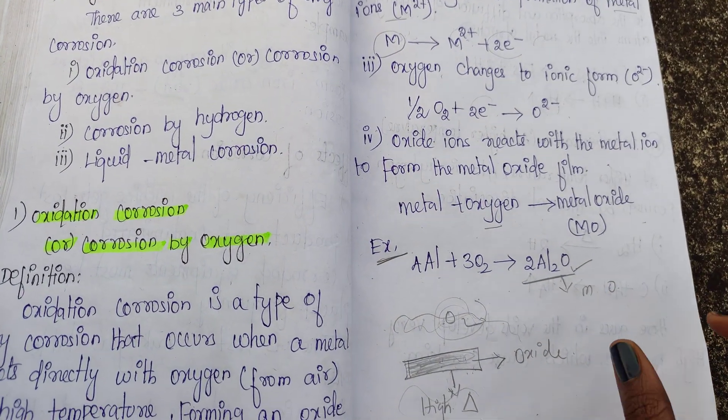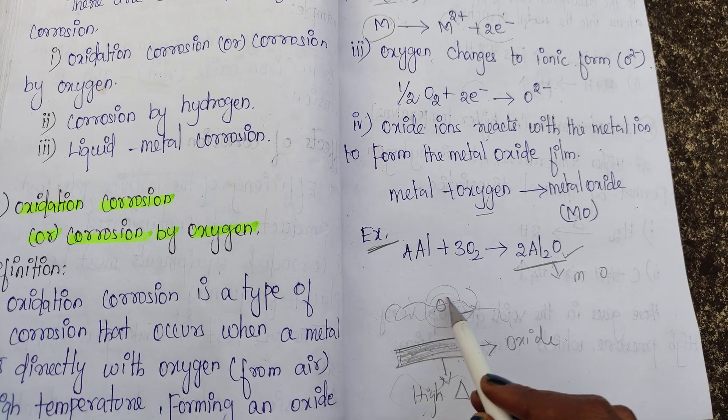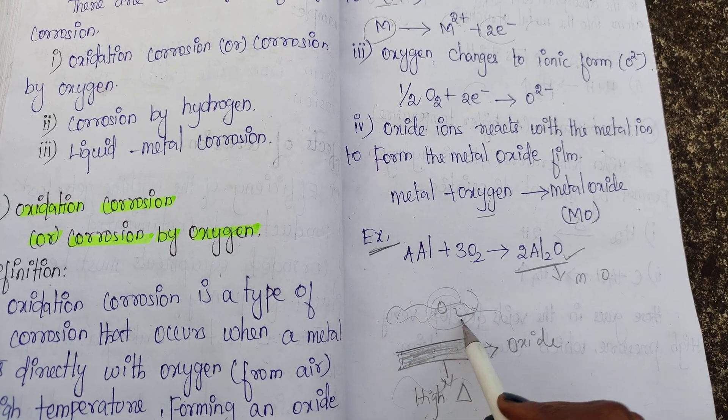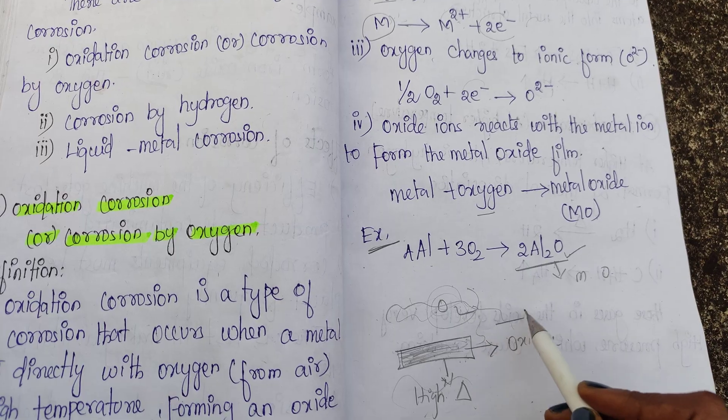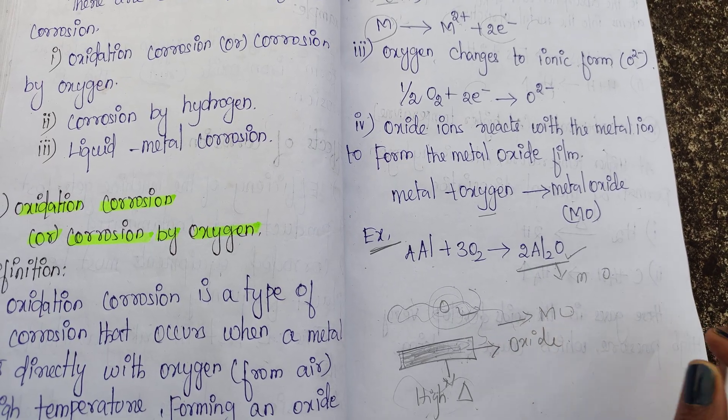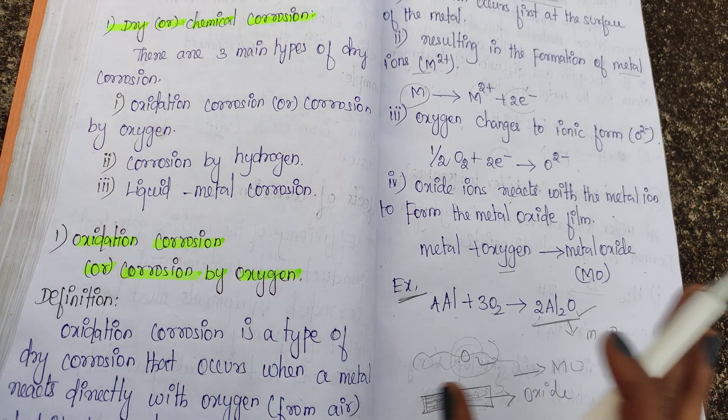Oxidation corrosion is nothing but one metal in the environment with oxygen that corrodes to form metal oxide. Oxygen causes the corrosion.